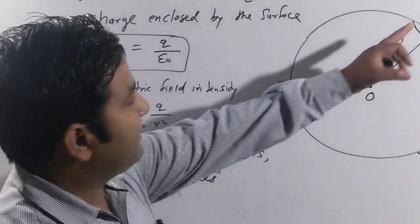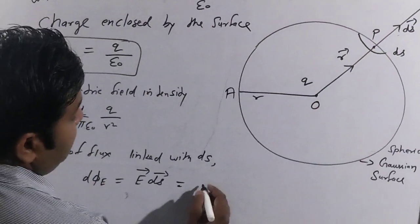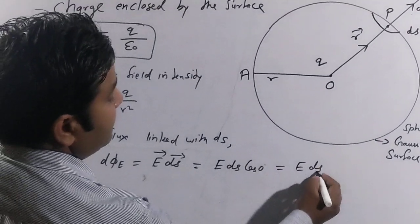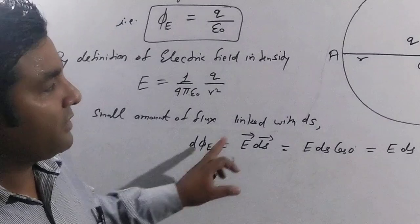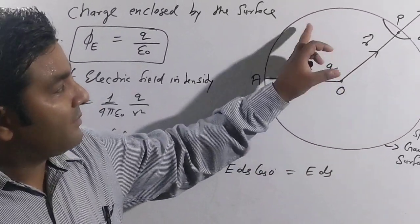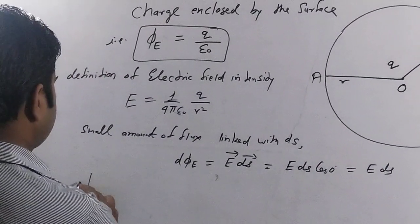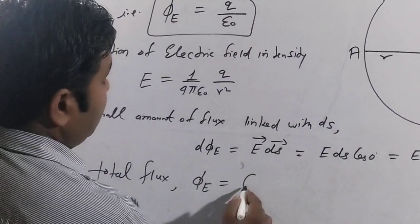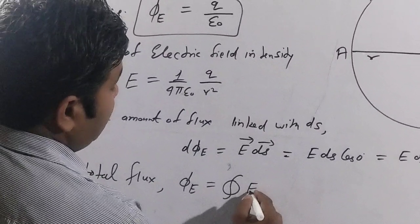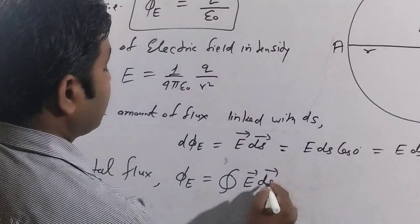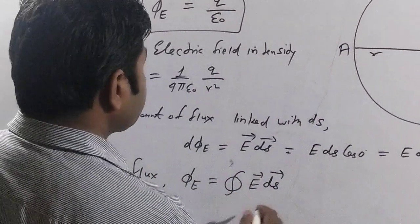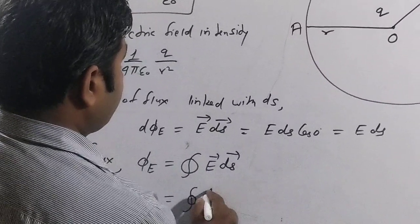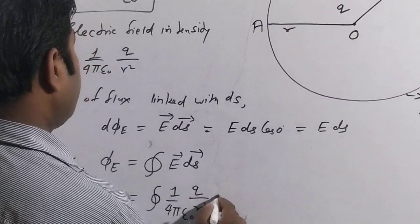The small flux dφₑ = E·dS. Here vector E and vector dS are in the same direction, so the angle between them is zero. Therefore dφₑ = E dS cos0° = E dS, since cos 0° = 1. With this small flux we can calculate the total flux linked with the charge passing through the enclosed surface. Total flux φₑ = ∮E dS, and the value of E is (1/4πε₀)(q/r²).